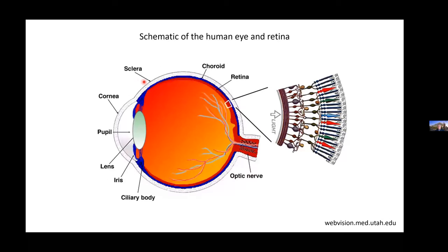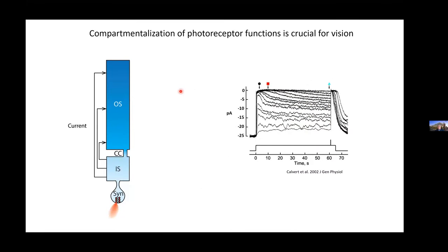Just to get us oriented, here is a schematic of the eye. We're really interested in understanding how the photoreceptors, which are the most distal neurons in the retina, form different compartments and how proteins are localized to those compartments. Photoreceptors are structurally compartmentalized: they have an outer segment compartment, a connecting cilium, an inner segment or cell body as the second major compartment, and the synapse as the third, which conveys visual information to downstream neurons.